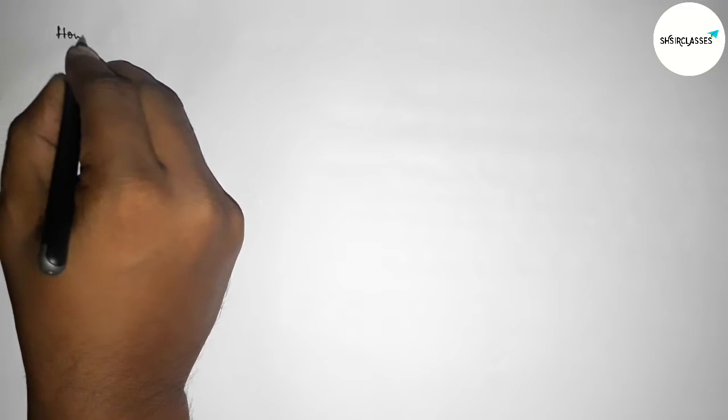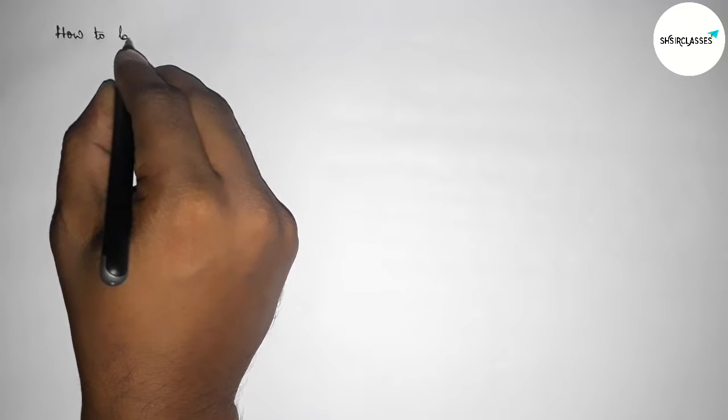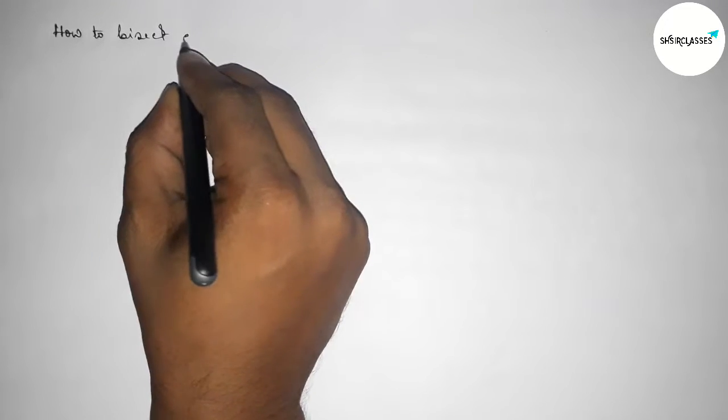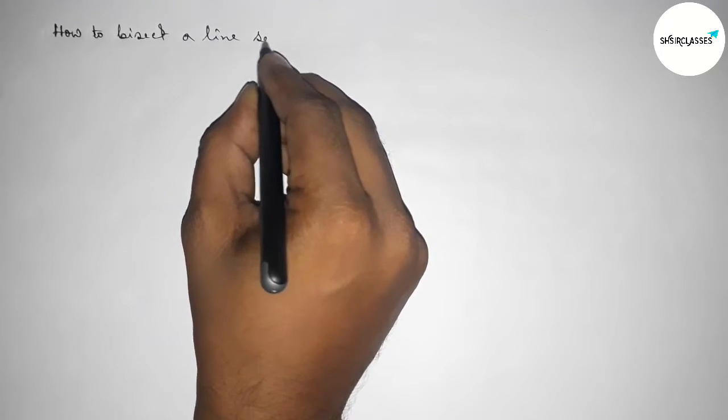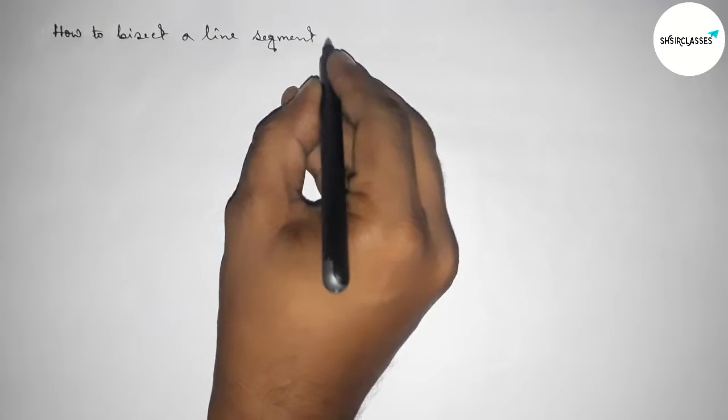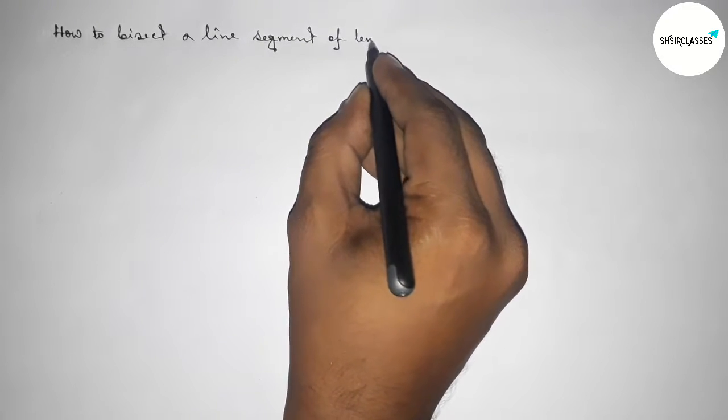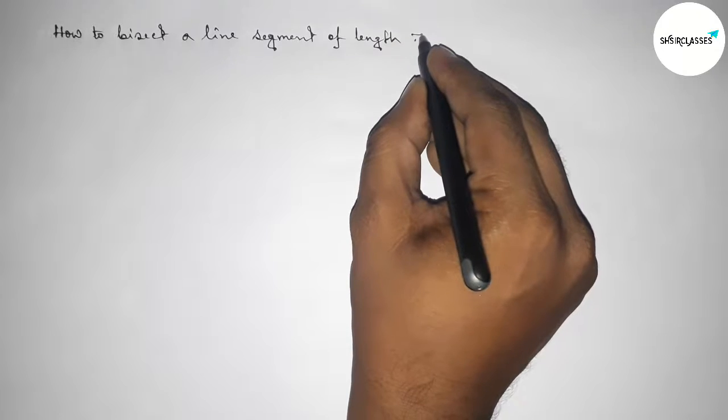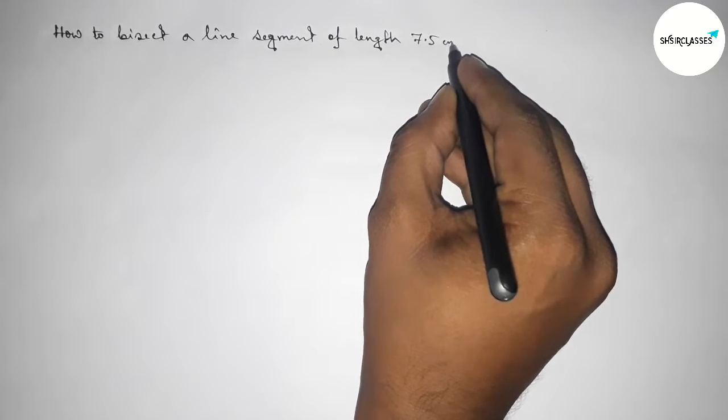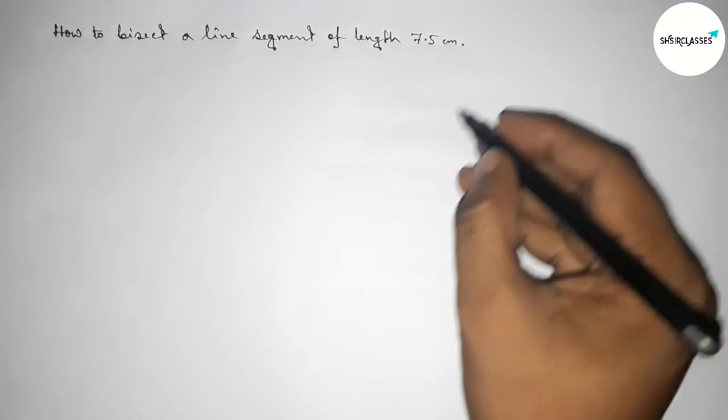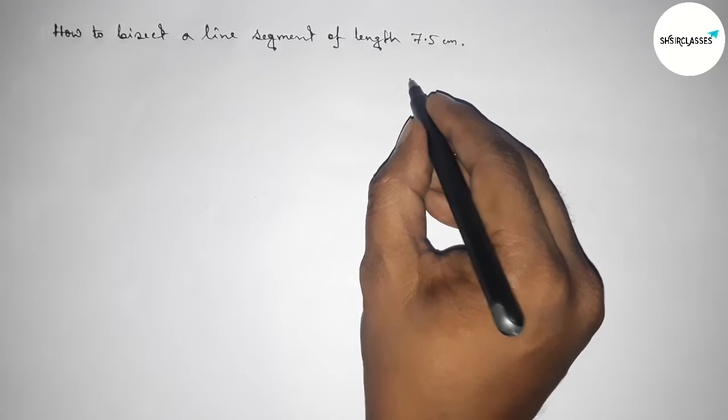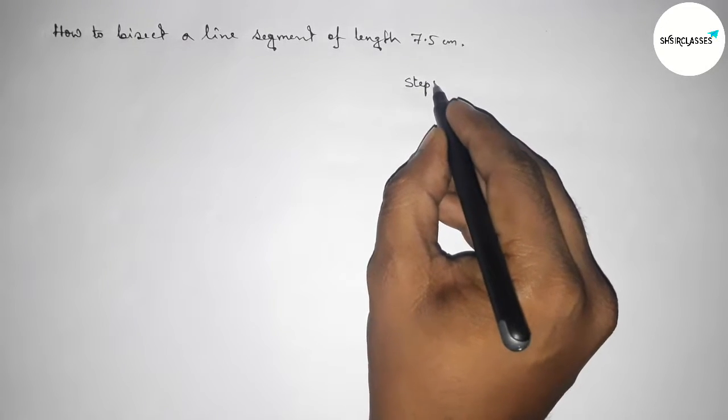Hi everyone, welcome to Essay Share Classes. Today in this video, we're discussing how to bisect a line segment of length 7.5 centimeters. So let's start the video. First of all, leaving here some space to write steps of construction.